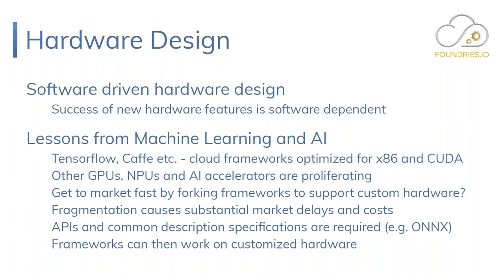Now we're seeing GPUs, neural processor units, and AI accelerators proliferating. Many startups and established companies are building their own NPU architectures. To get products to market fast, a lot of these companies are not CUDA-compliant and not x86-compliant — so they're taking TensorFlow, Caffe, and so on, and writing their own back end. That's creating a fork — a bunch of technical debt that has to be maintained as TensorFlow and Caffe move forward. That's hard and it's expensive, and it's a good example of fragmentation causing substantial market delays and costs.